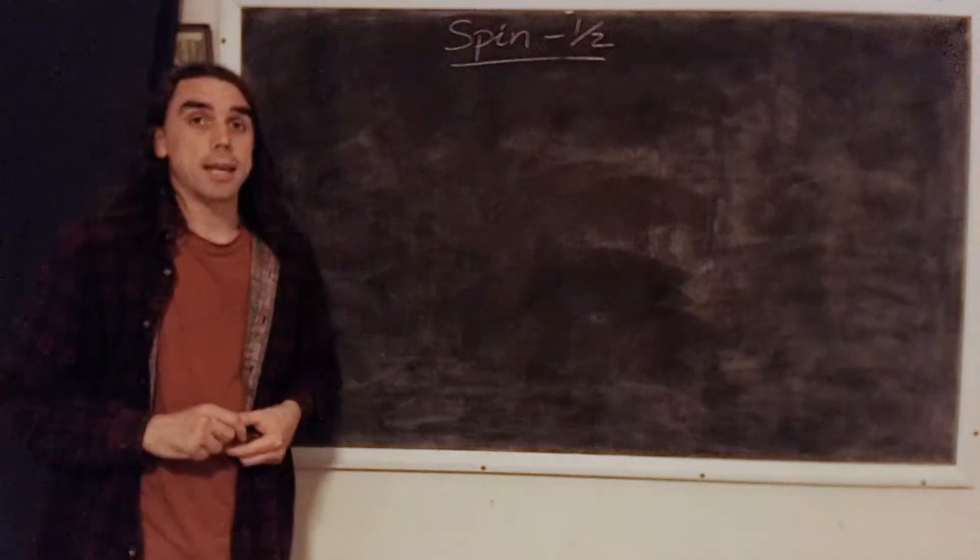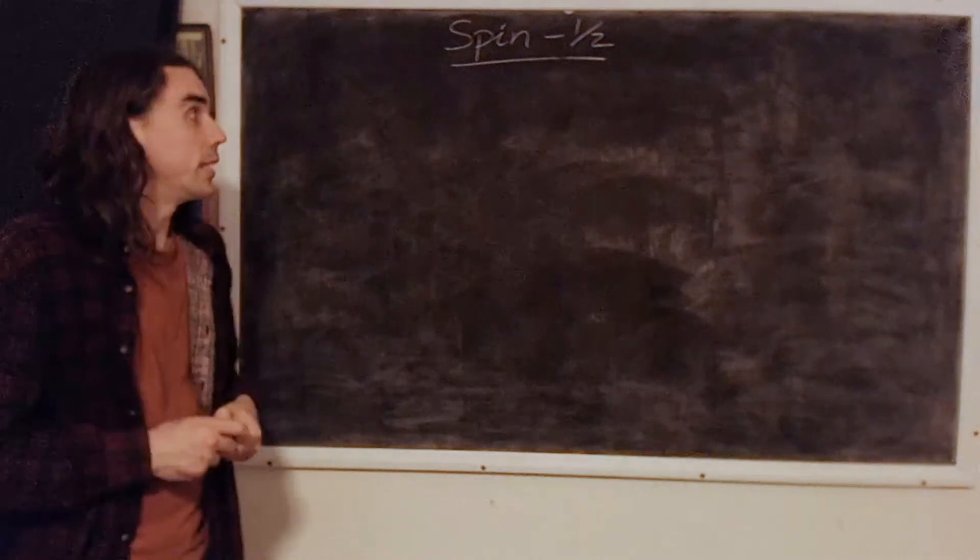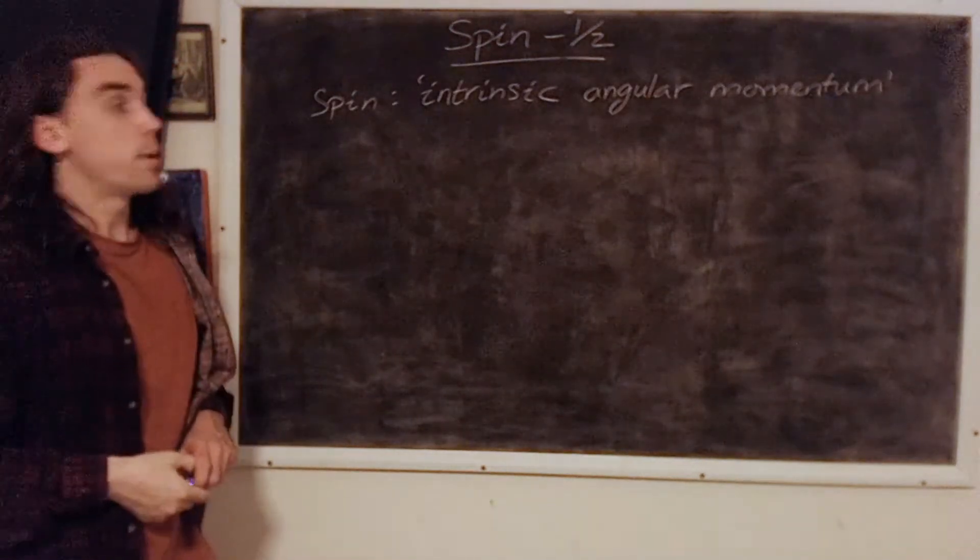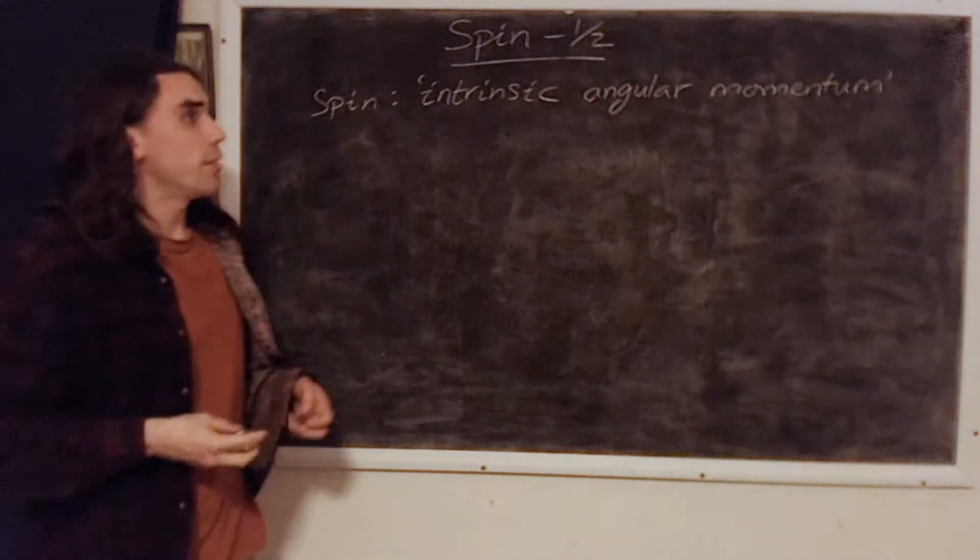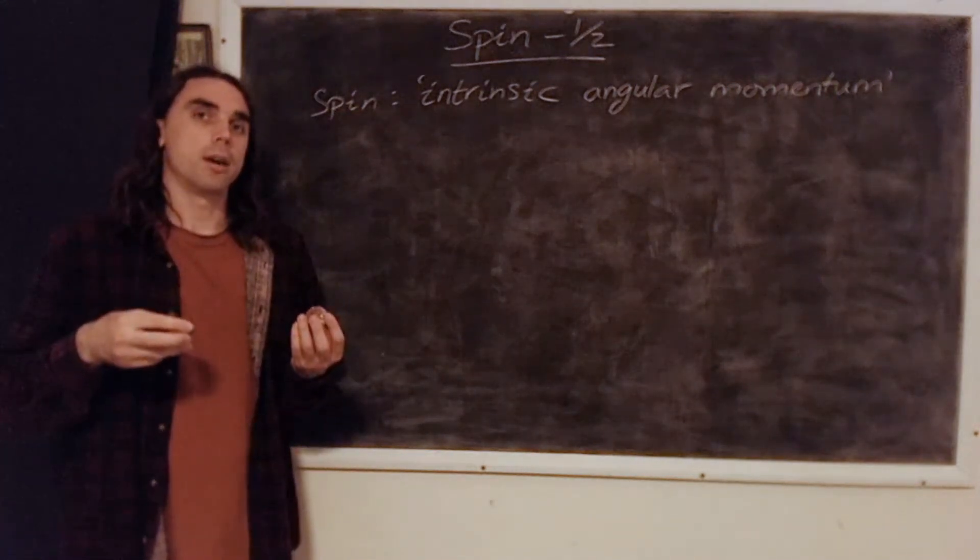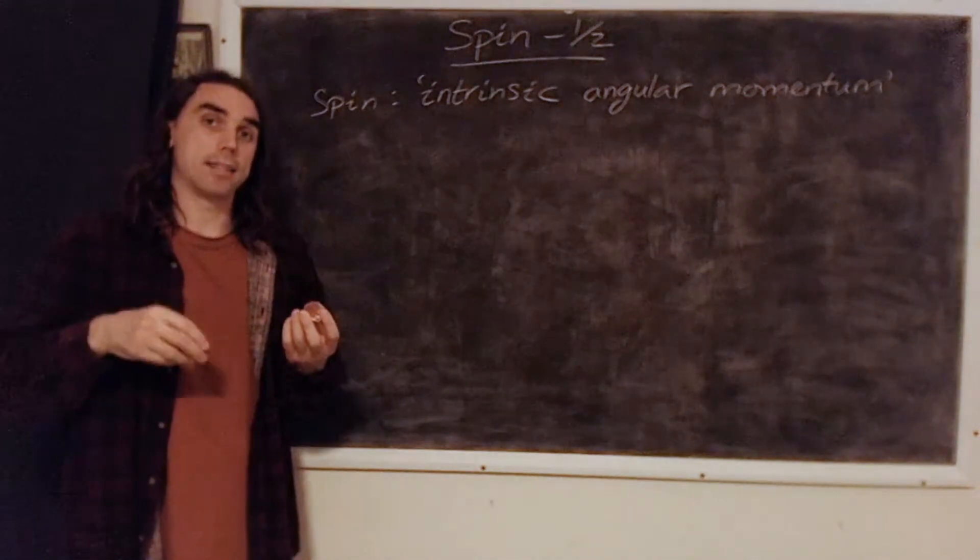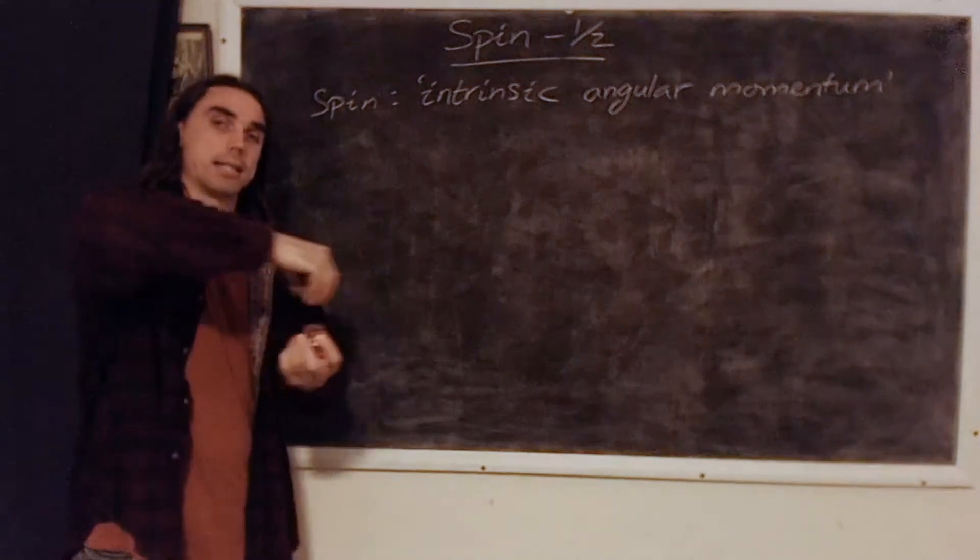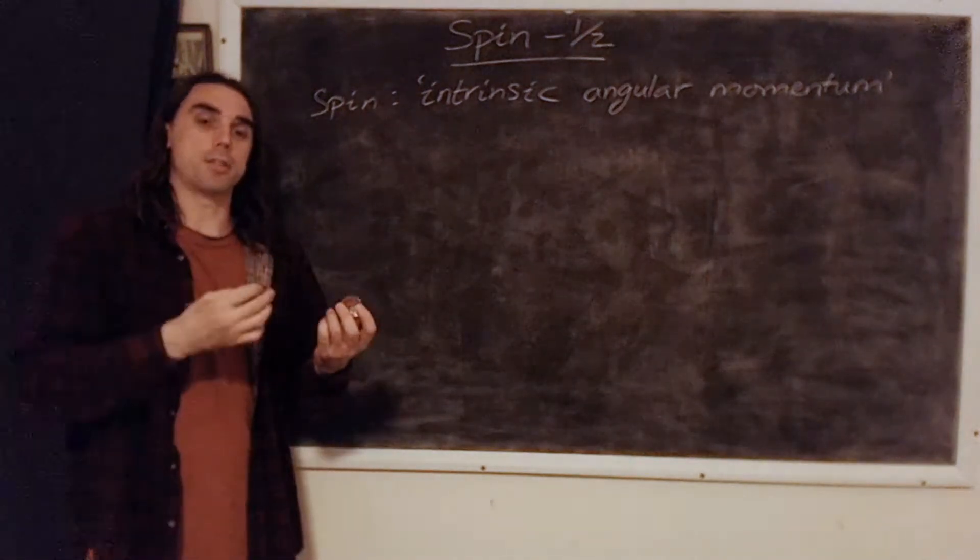So spin is a quantum property which is also known as intrinsic angular momentum. If we think kind of classically for a minute and think of the electron in the atom as like the Earth orbiting the Sun, so kind of orbiting like this, well that has angular momentum.